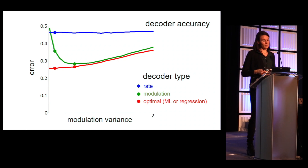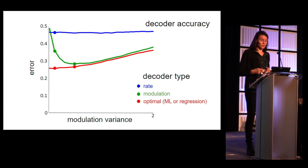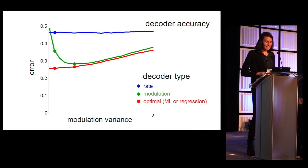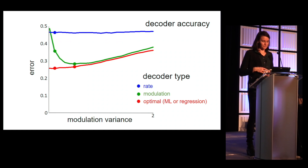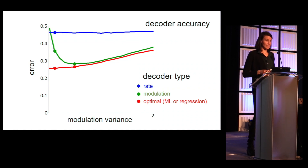However, as we further increase the modulation variance, we will of course continue to increase the noise of the informative neurons, making them less reliable, and therefore the modulation-based decoder error rate will also increase. This suggests that there is an ideal amount of modulation variance for such a decoding mechanism. We do not yet have a quantitative analysis of how this matches experimental results, but our model parameters are similar to those fit by Rabinowitz et al. to data, so we believe them to be plausible.